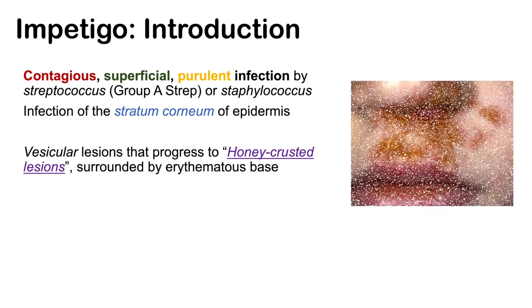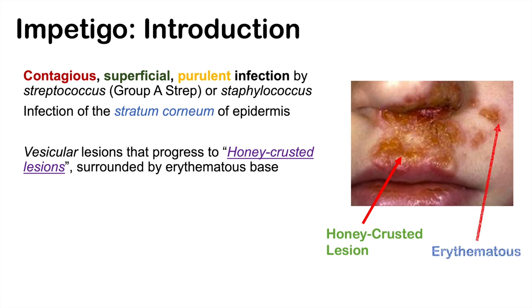If you were to take a close view of a honey-crusted lesion, like we see here, it's a yellowish, crusty lesion. And if you were to look at the surrounding surfaces, it is erythematous — so it's on an erythematous base.